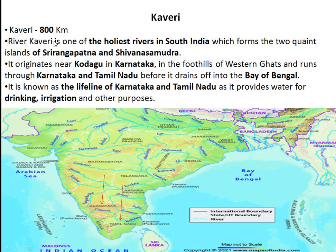Next is Kaveri, which is about 800 kilometers. It is one of the holiest rivers in South India, forming the two islands of Srirangapatna and Shivanasamudra. It originates near Kodagu in Karnataka, in the foothills of the Western Ghats, and flows through Karnataka and Tamil Nadu. It provides water for drinking, irrigation, and other purposes.